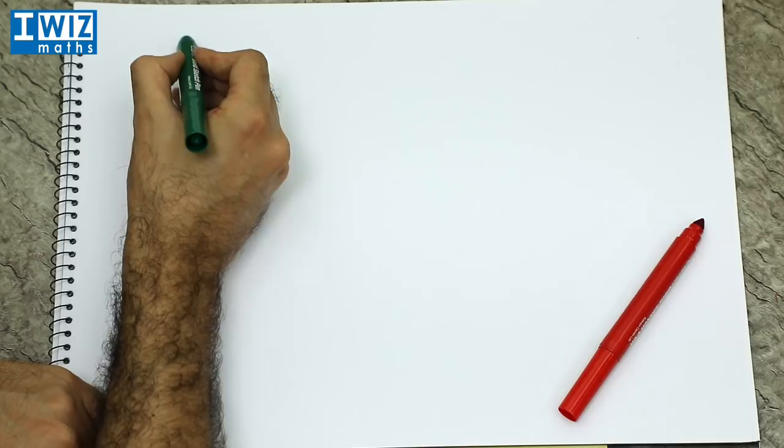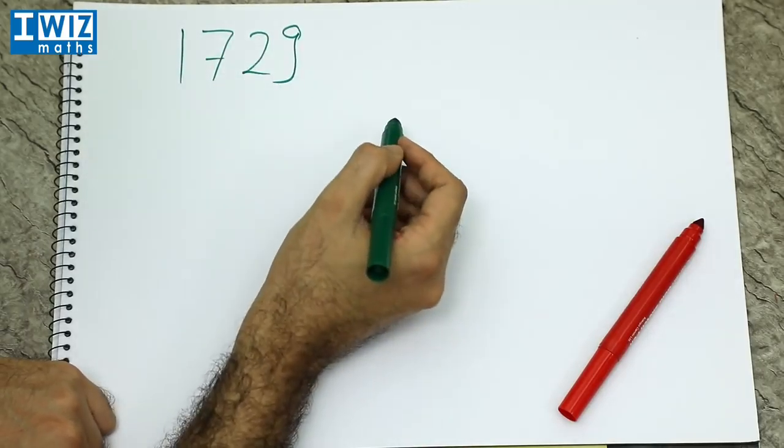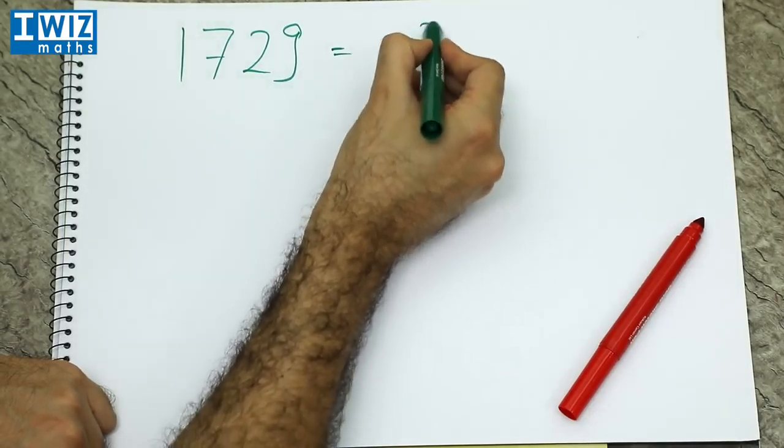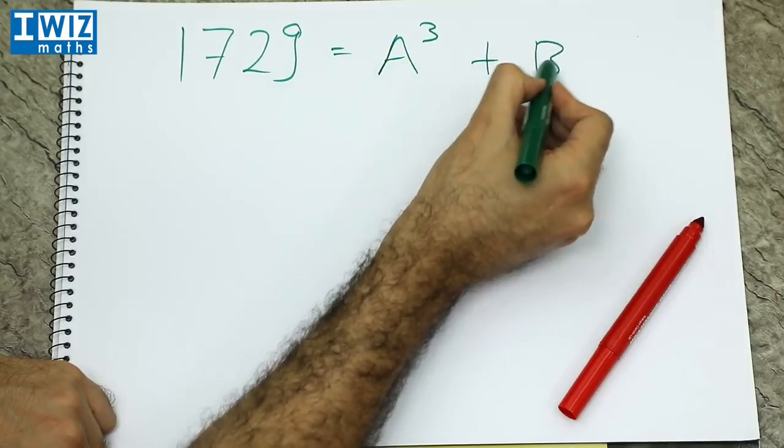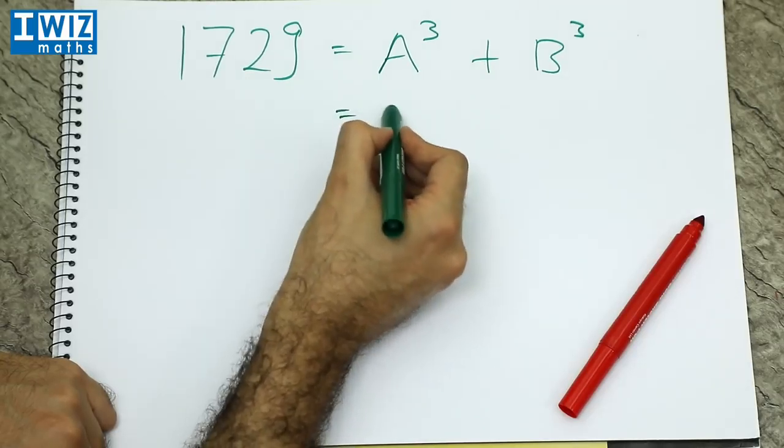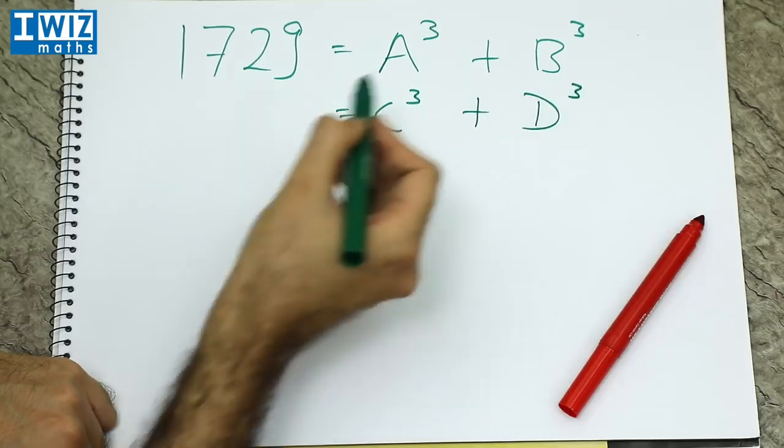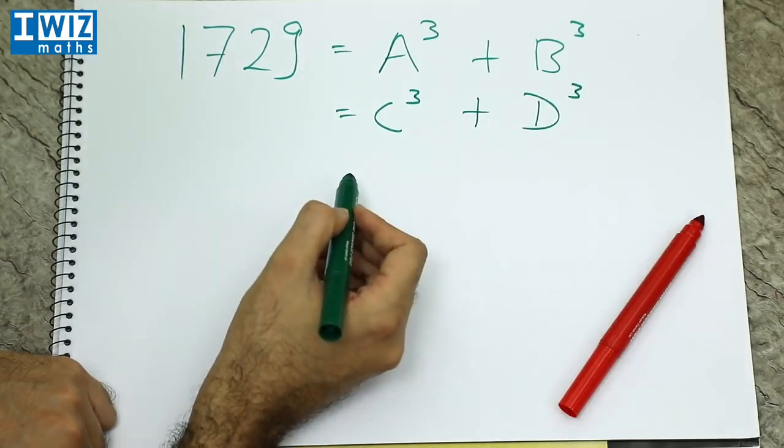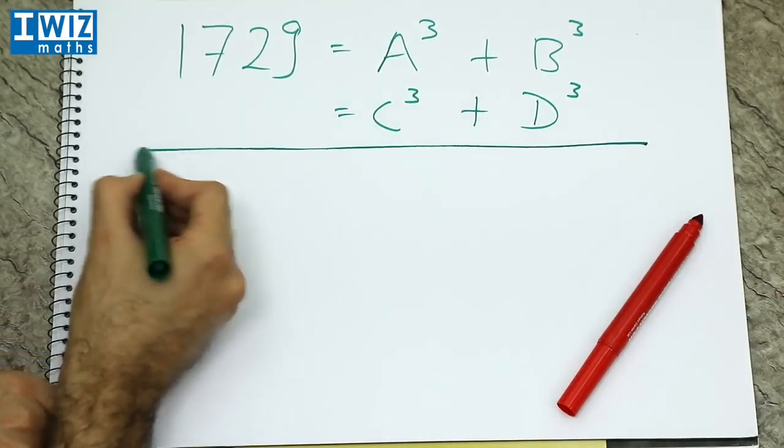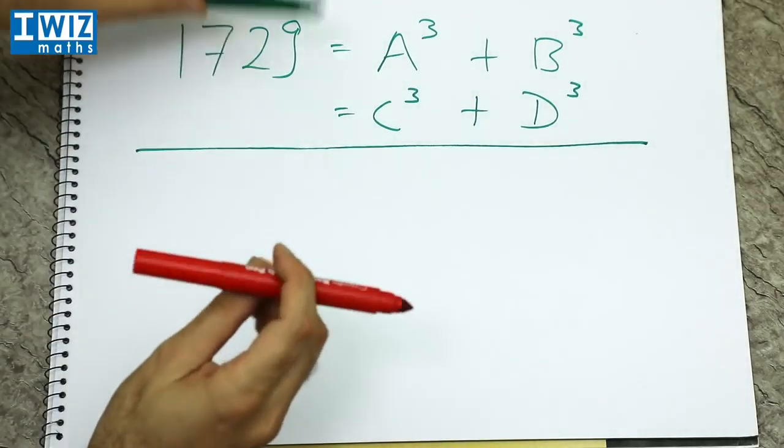The number that we had was 1729. And what we said was that this can be written as the sum of two cubes. So that's A cubed plus B cubed in two different ways. So 1729 can be also written as C cubed plus D cubed. And the question that we posed was the following. Can we find A, B, C, and D? So that was the question that we actually posed.